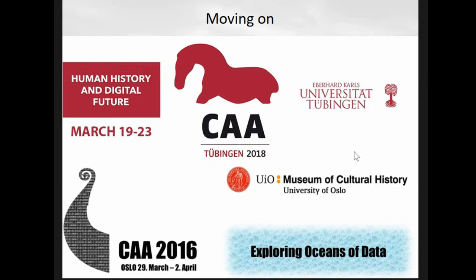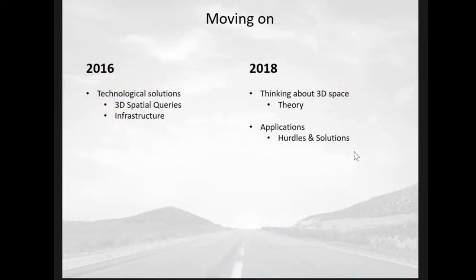Back in 2016 I really talked about technological solutions, 3D spatial queries, and the general infrastructure of what a 3D GIS could look like. Today I'm going to move much more into thinking about 3D theory — theory of 3D space — and then also some applications, hurdles, and possibly some solutions.